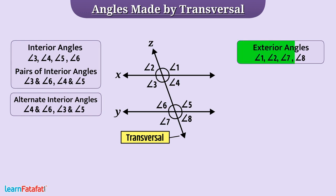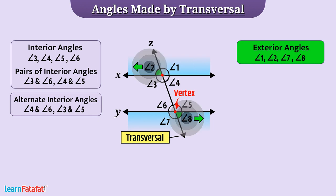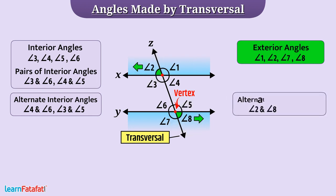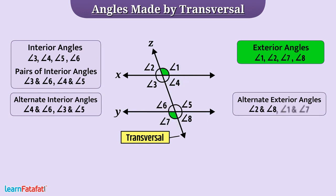Now, let's talk about exterior angles. Angle 2 and angle 8 have different vertices. Both are present on the outer side of the transversal as well as on opposite sides of the transversal. Such angles are called alternate exterior angles. Here, angle 1 and angle 7 are also a pair of alternate exterior angles.